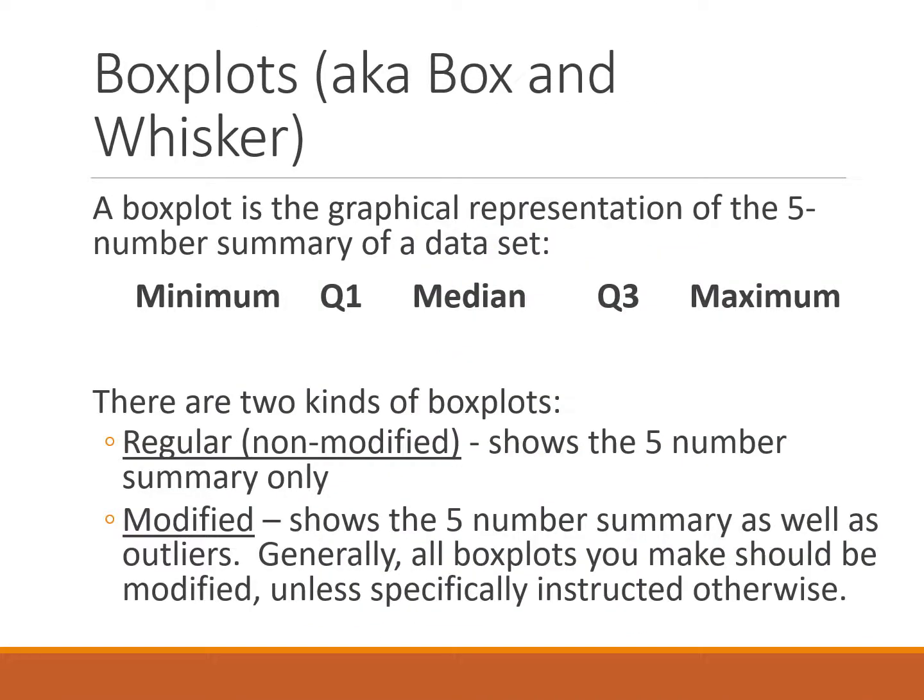Nine times out of ten when we find quartiles we're finding them as part of a five number summary which we're going to use to make a box plot. A box plot is just a graphical representation of the five numbers that we can boil down a data set to, and those five numbers are the minimum, the maximum, and the three quartiles.